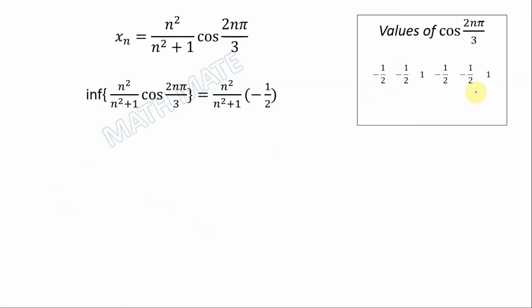In order to identify the lower limit, we need to first identify the infimum. The infimum of this expression, as you see here, is the minimum value of cosine, which is negative 1/2.